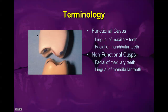Terminology: facial is on the right, lingual on the left. Any cusp that sits between two other cusps — contacting two other cusps — is a functional cusp. On mandibular teeth, the functional cusp is the facial cusp; on maxillary teeth, it's the lingual cusp. Non-functioning cusps only contact one other cusp: on maxillary, the facial cusps; on mandibular, the lingual cusps.